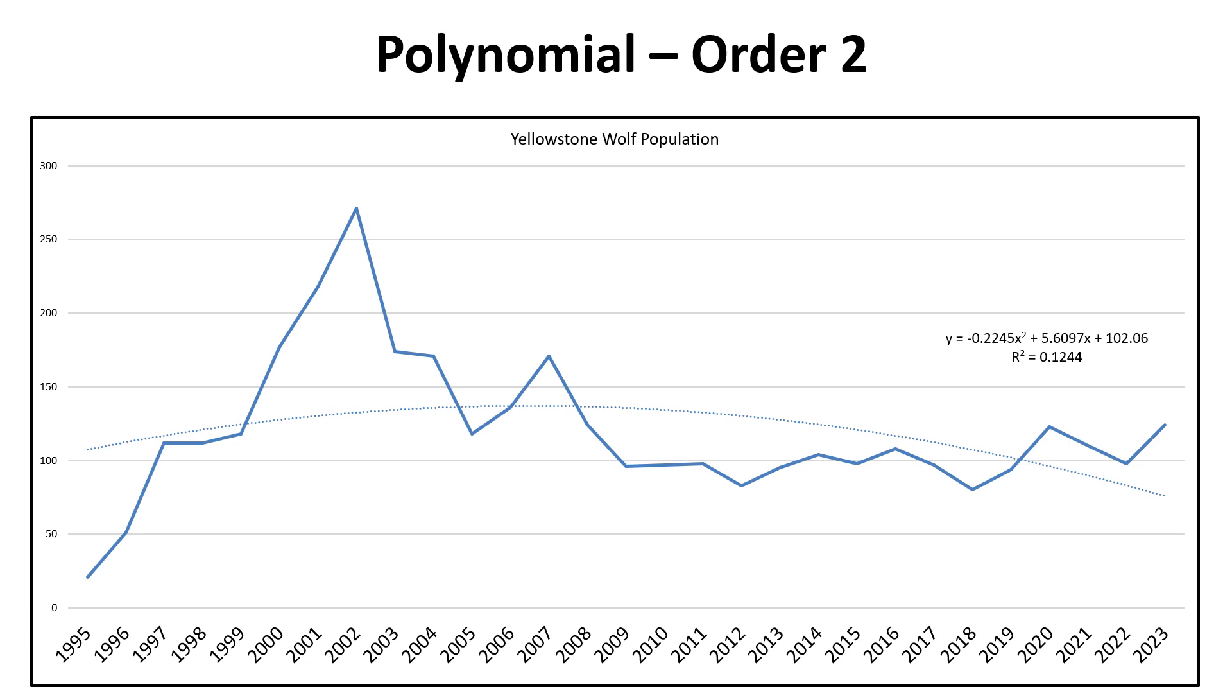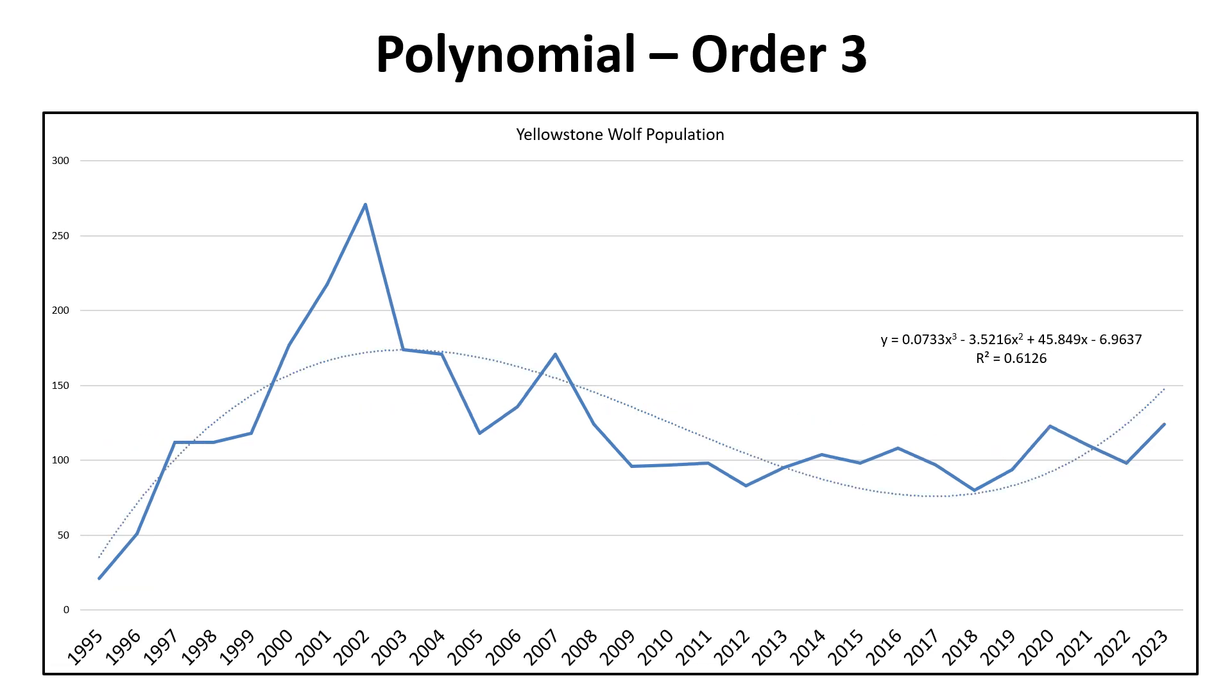Polynomial of order two - my R-squared is a little bit better, it's still not great. This is a negative quadratic given by y equals minus something x squared plus an x plus a constant. All of that calculation is done for you in Excel.